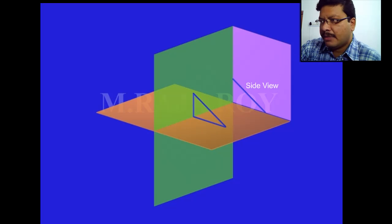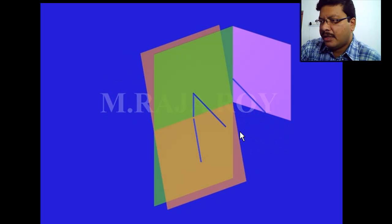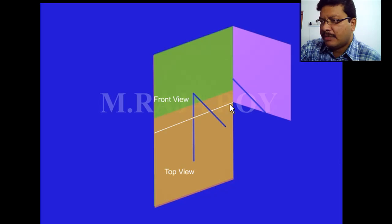And you can observe one important observation here. After rotating the horizontal plane something like this, that means after opening the first quadrant completely, you will get the front view and top view on the same projector. That is one of the important observations here.